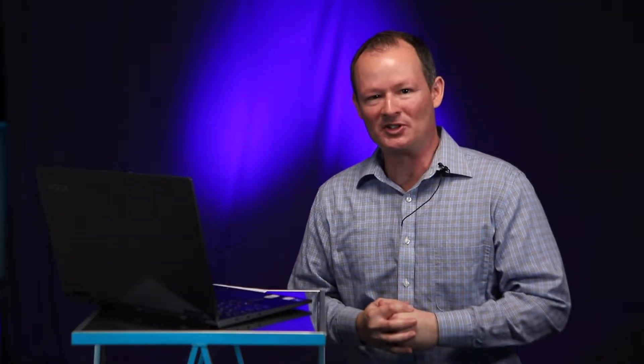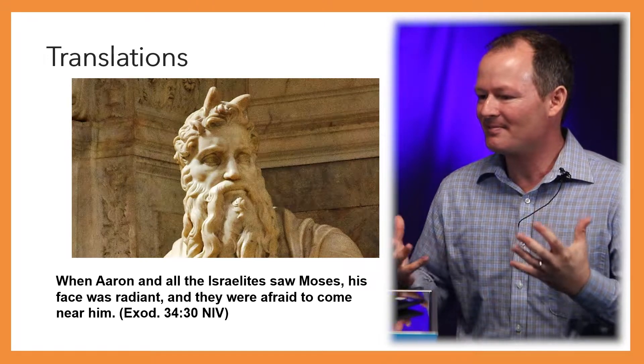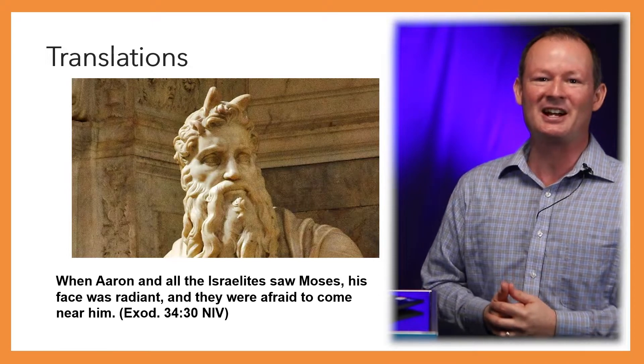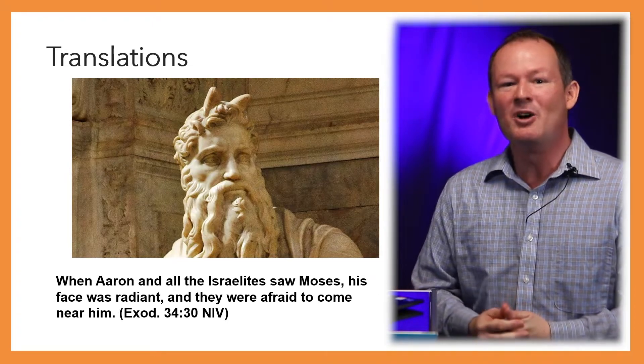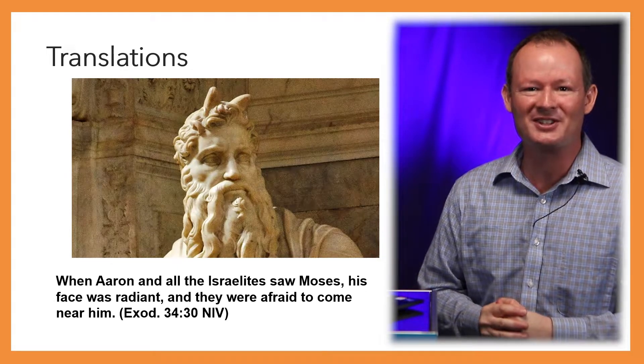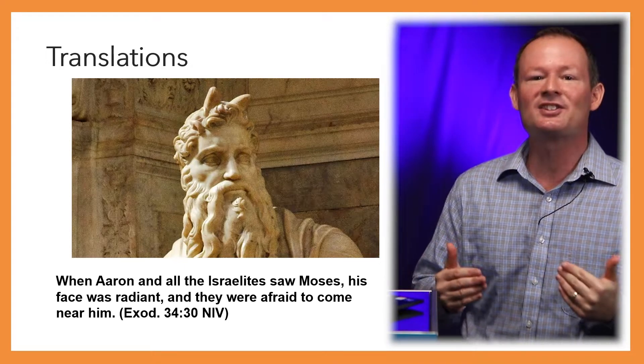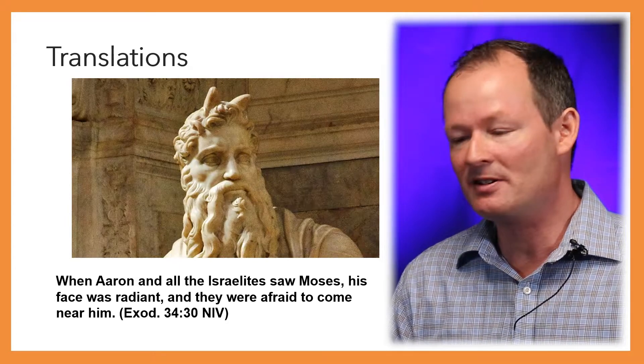First, let's look at this image of Moses. This is done by Michelangelo centuries ago, obviously. And Moses looks a bit odd. Moses has two horns sticking out of his head. And you may wonder, why does Moses have horns? Typically, we see cartoons of the devil with two horns sticking out of his head. So why would Moses have that? Well, it's based on a verse, Exodus 34:30.